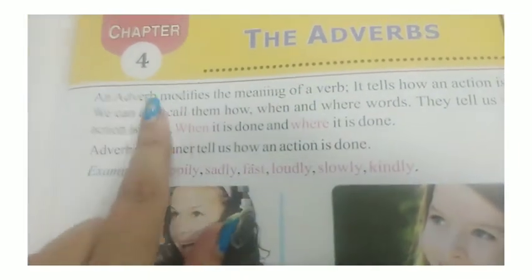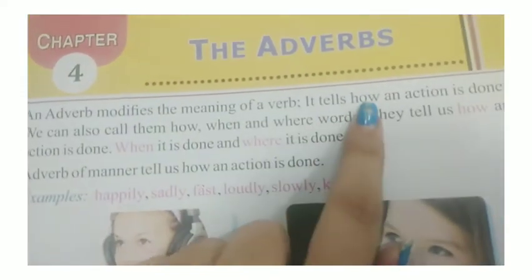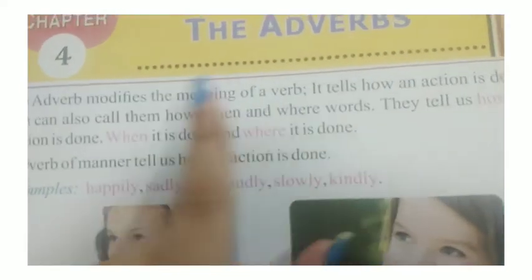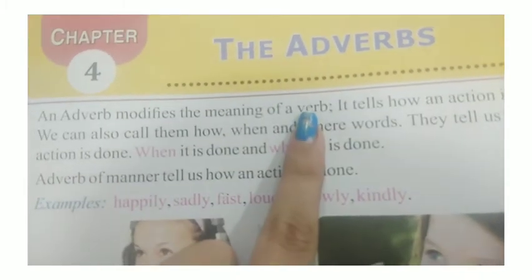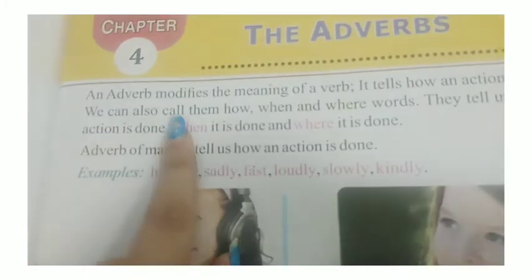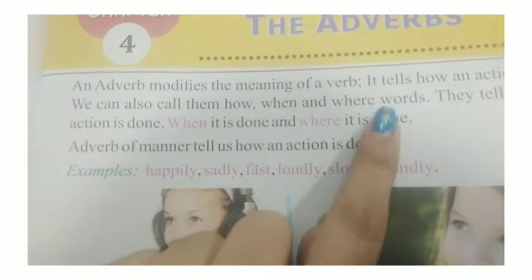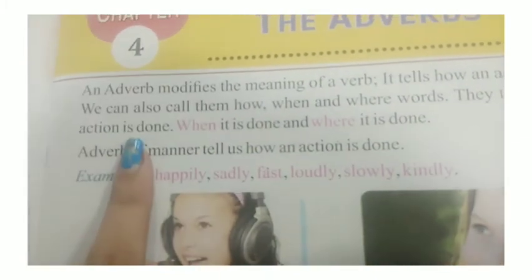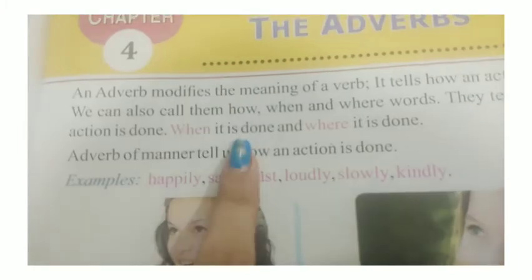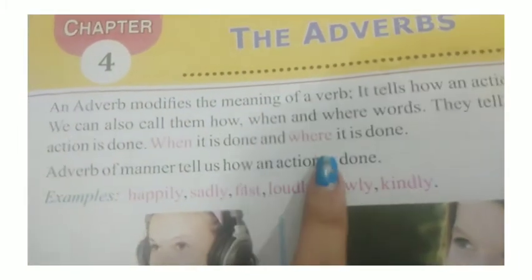An adverb modifies the meaning of a verb. It tells how an action is done. We can also call them how, when, and where words. They tell us how an action is done, when it is done, and where it is done.